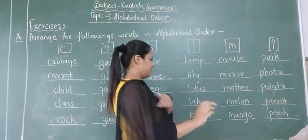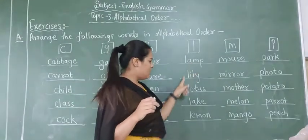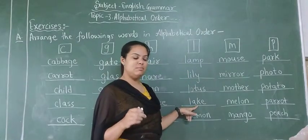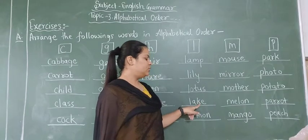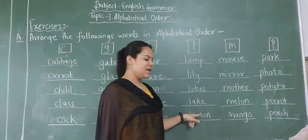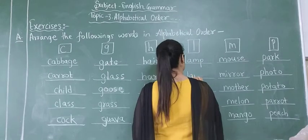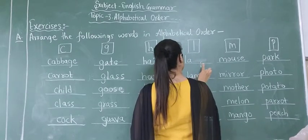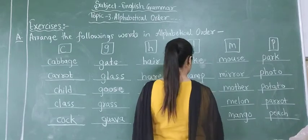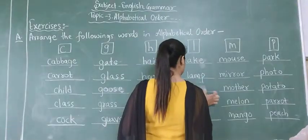Then come to the L letter. L letter me sab se pehle aana chalega L ke baad A wala word. So L-A-M-P lamp is the correct one. Also L-A-K-E lake. We have to see the next letter. A ke baad, which letter hai? K. Or here A ke baad hai M letter. So K pehle aata hai ki M? K pehle aata hai. So L-A-K-E lake we will write first. And L-A-M-P lamp second.